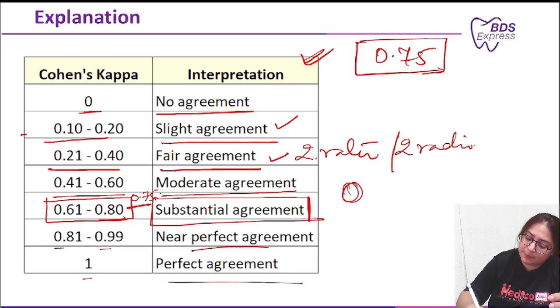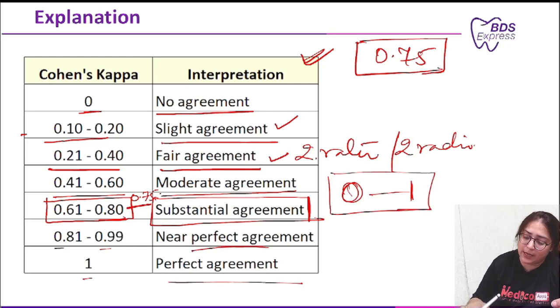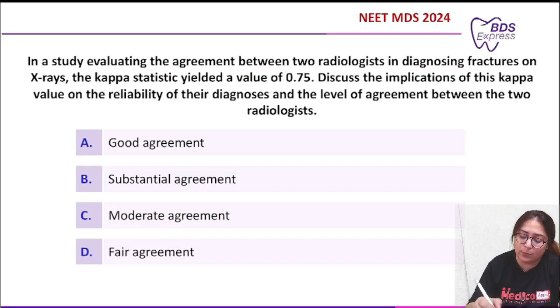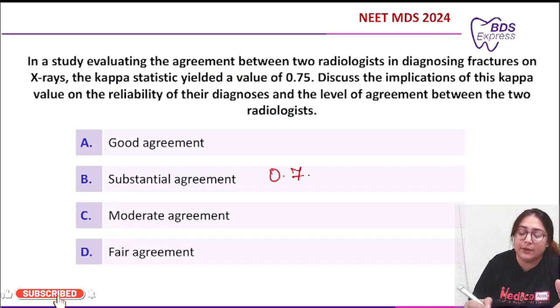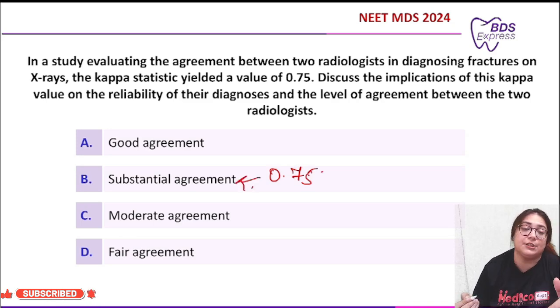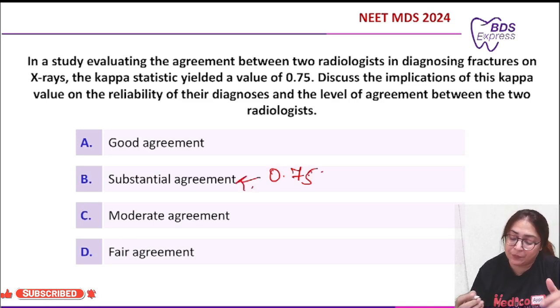So the kappa value ranges from 0 to 1. Coming back to our question, 0.75 falls under substantial agreement.